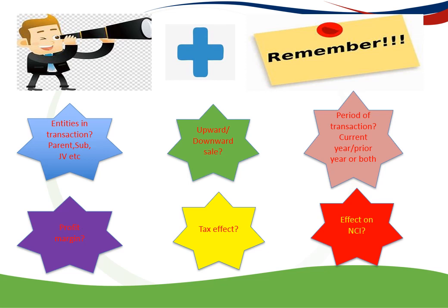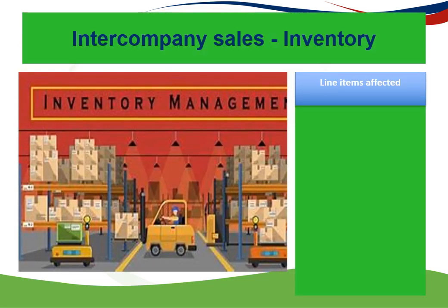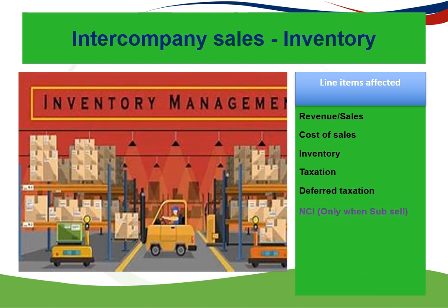Always account for the tax effect — if something is affecting my profit, it will affect my tax, so remember to do it. Then lastly, make sure to account for the effect on NCI, the non-controlling interest. With Intercompany Sales, it's only affecting the NCI if it is an upward sale — in other words, if the subsidiary sells to the parent. The line items normally affected are: Revenue or Sales, Cost of Sales, Inventory, Taxation, Deferred Taxation, and NCI — but NCI only when the subsidiary sells.